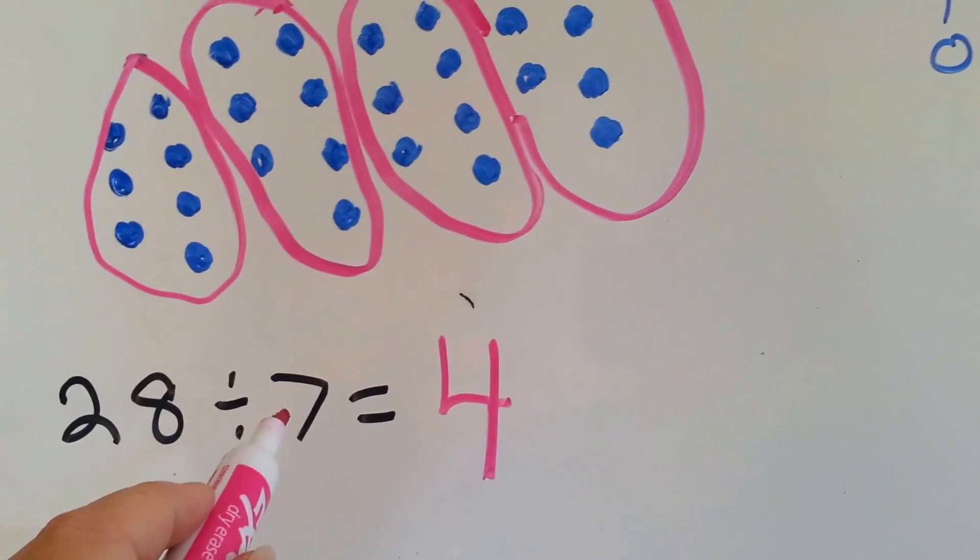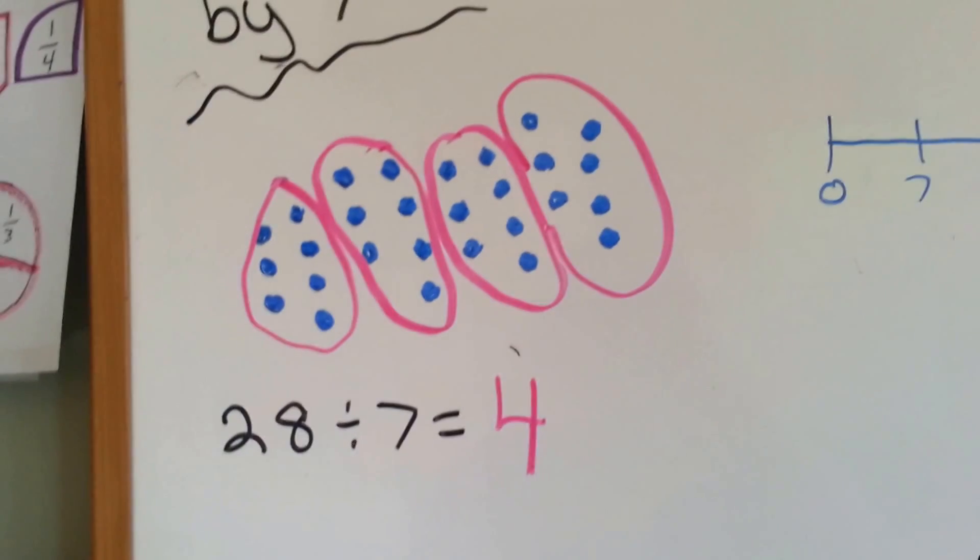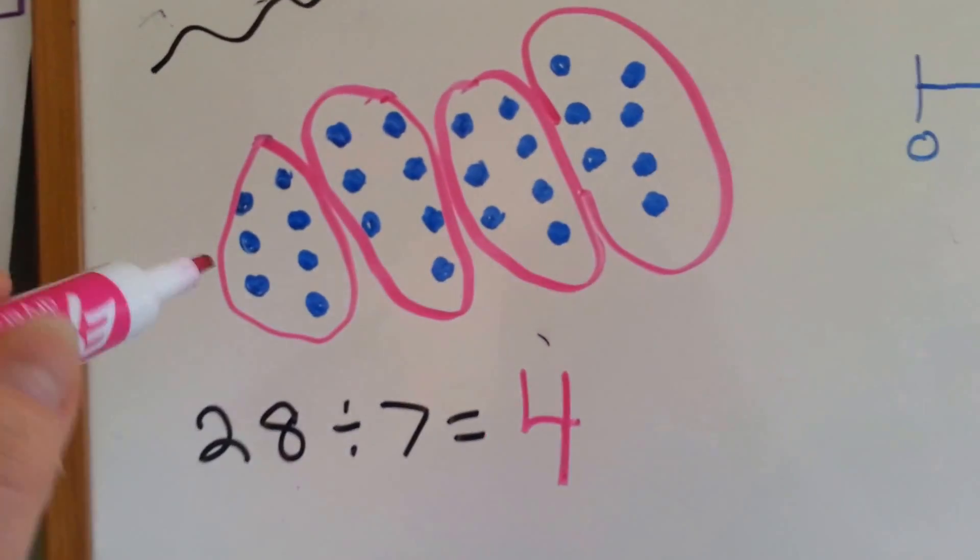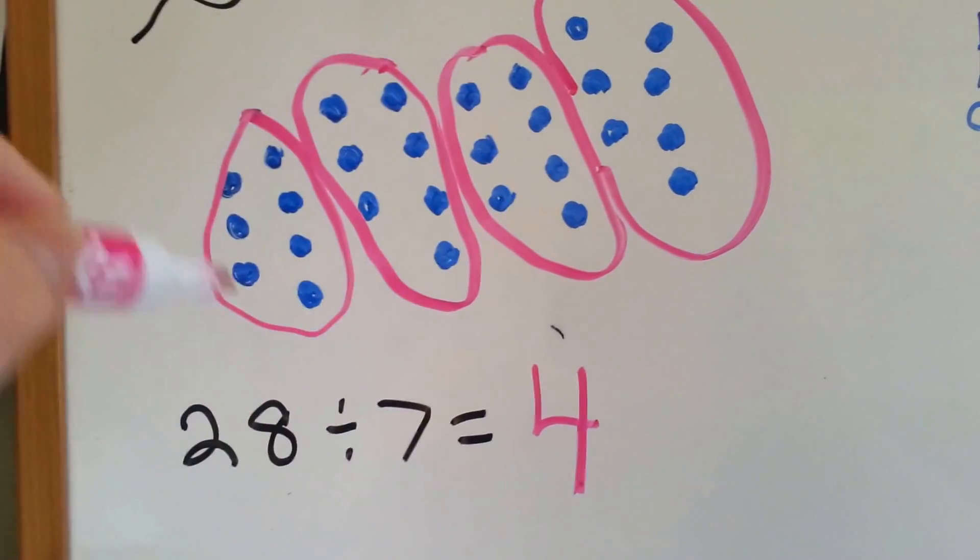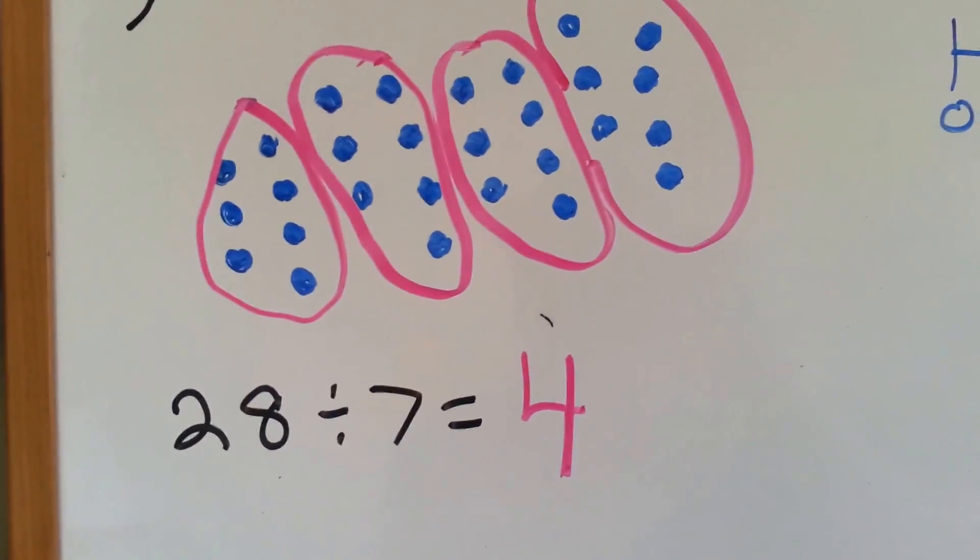28 divided by 7 equals 4. We have 4 groups with 7 in each group. Now we also could have done 7 circles, 7 groups...